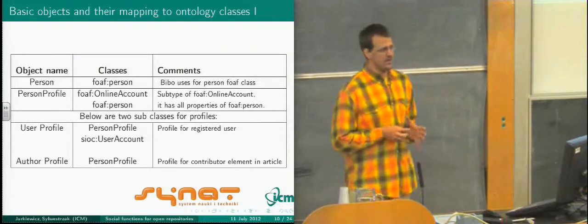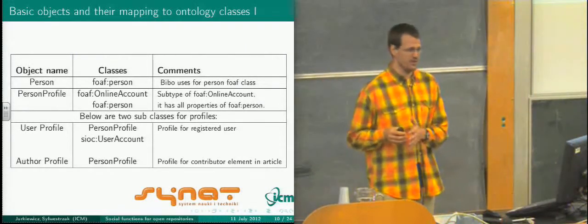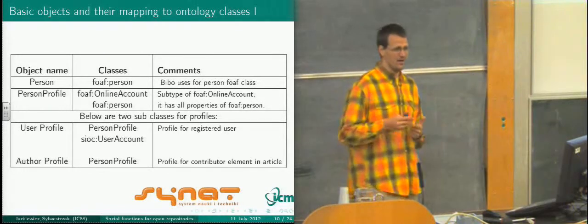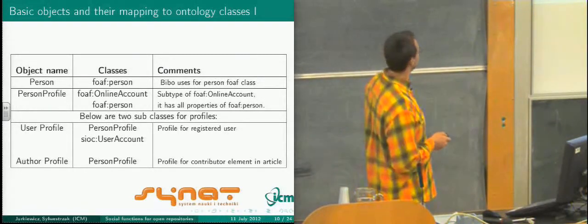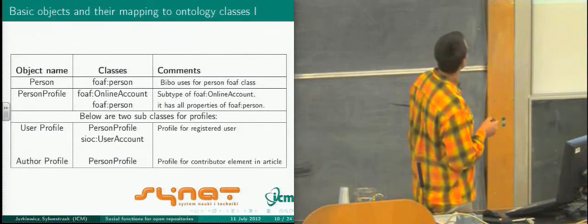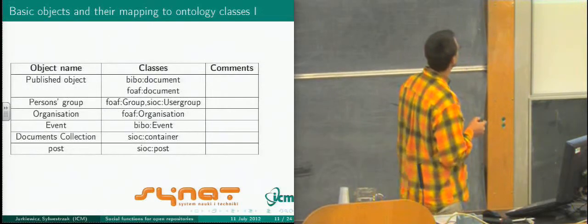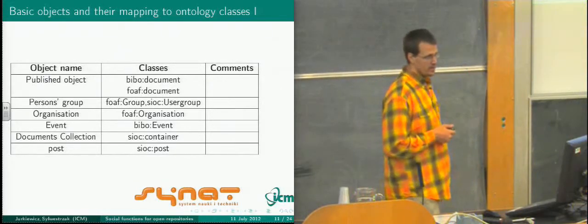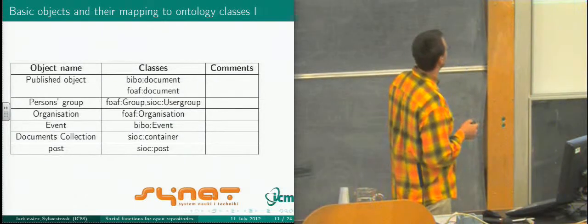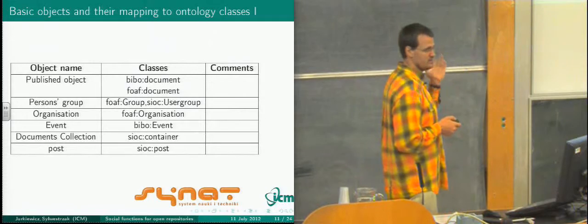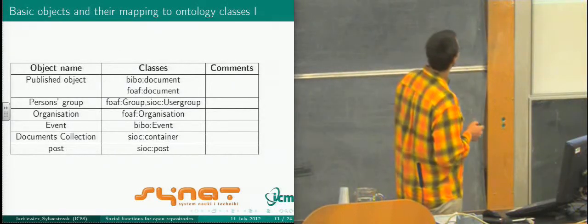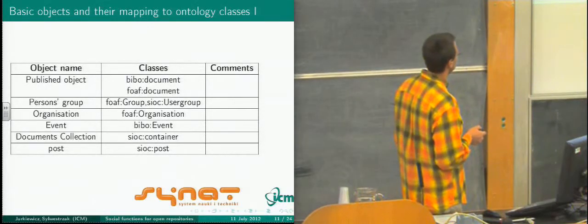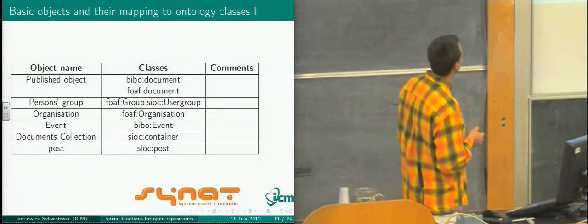Person profile has two subclasses: user profile and author profile. Sometimes it's a problem to identify an author of a work — for example, I know there is a second Jakub Jorkiewicz in Poznan, who was also doing a PhD in computer science, so our works could be mixed very easily. We have author profile and user profile, and we have the person. We would also need a published object — something usually close to an article, journal, or book, but not limited to it; it could also be a computer program or video recording.